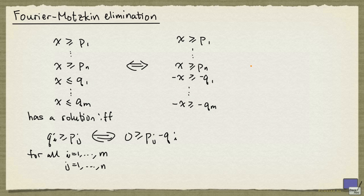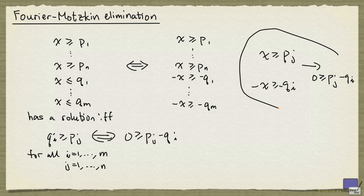So for example, if I take x greater than or equal to pj, and minus x greater than or equal to minus qi. From these you can infer the inequality 0 greater than or equal to pj minus qi. And this is the mechanism that we are going to use in the description of the Fourier-Motzkin elimination.